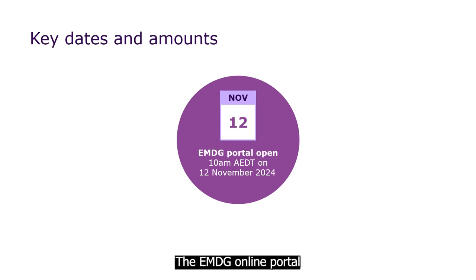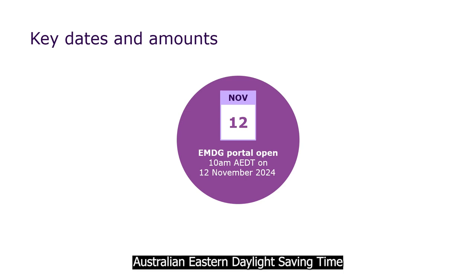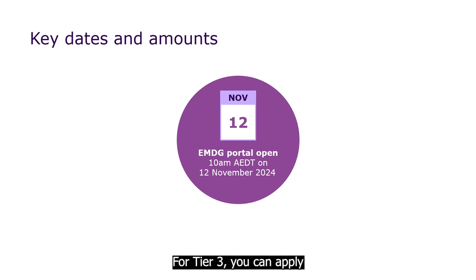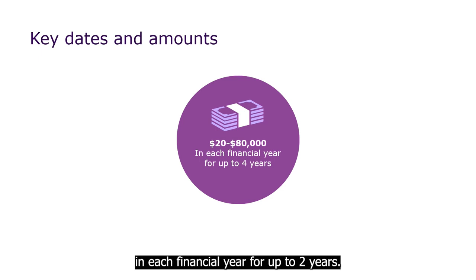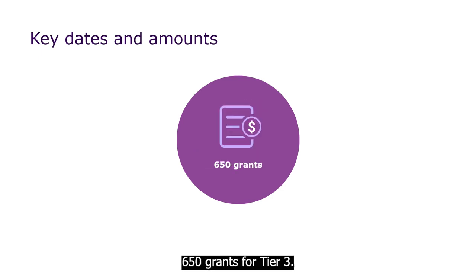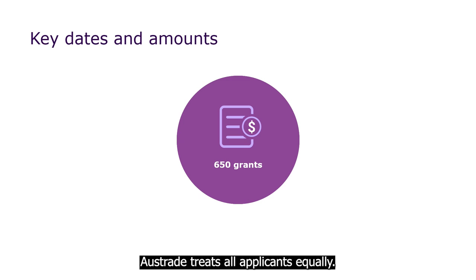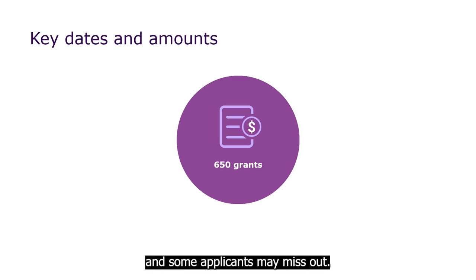The EMDG online portal will open for applications at 10am Australian Eastern Daylight Saving Time on Tuesday, November 12, 2024. For Tier 3, you can apply for a grant amount of between $20,000 and $80,000 in each financial year for up to two years. We expect to offer approximately 650 grants for Tier 3. Austrade treats all applicants equally — grants will be assessed in the order they are received and some applicants may miss out.